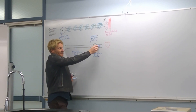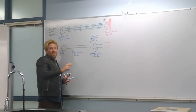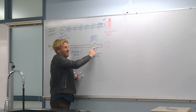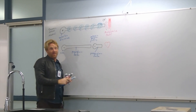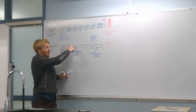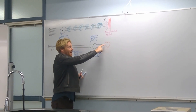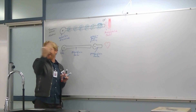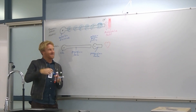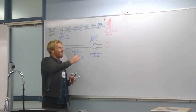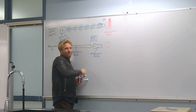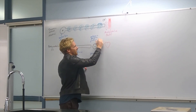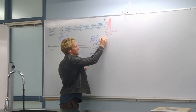The postganglionic neuron is super short — sometimes so short that its cell body hangs out in the wall of the target organ itself. So the preganglionic neuron is long, getting all the way to, say, the heart, while the postganglionic cell body is probably right next to the heart — very close to the target organ.